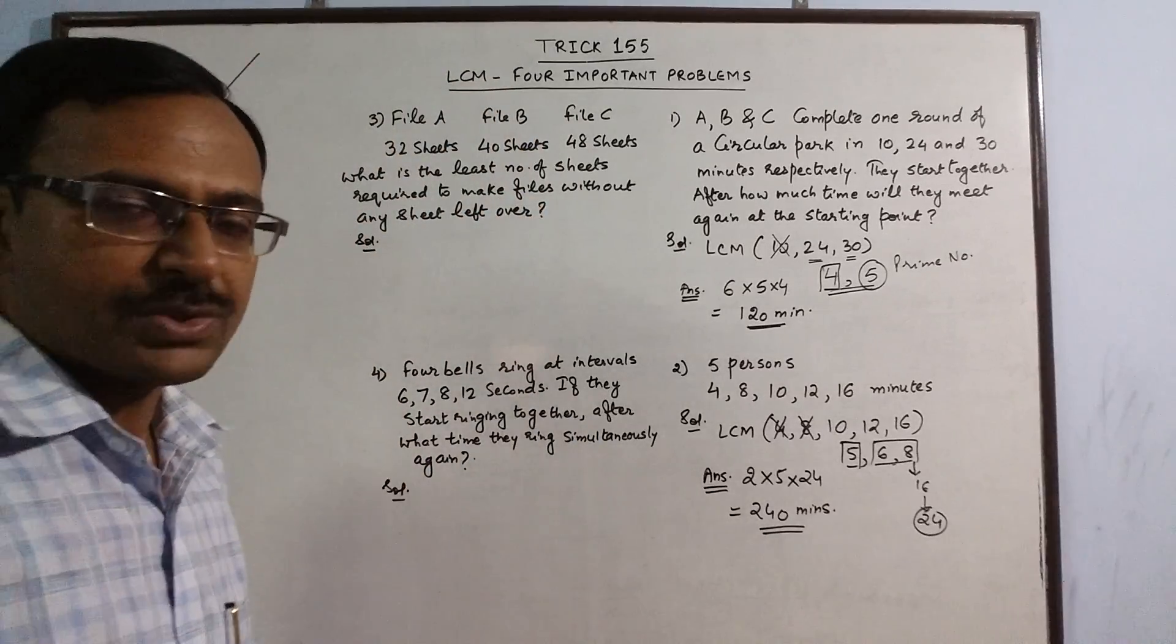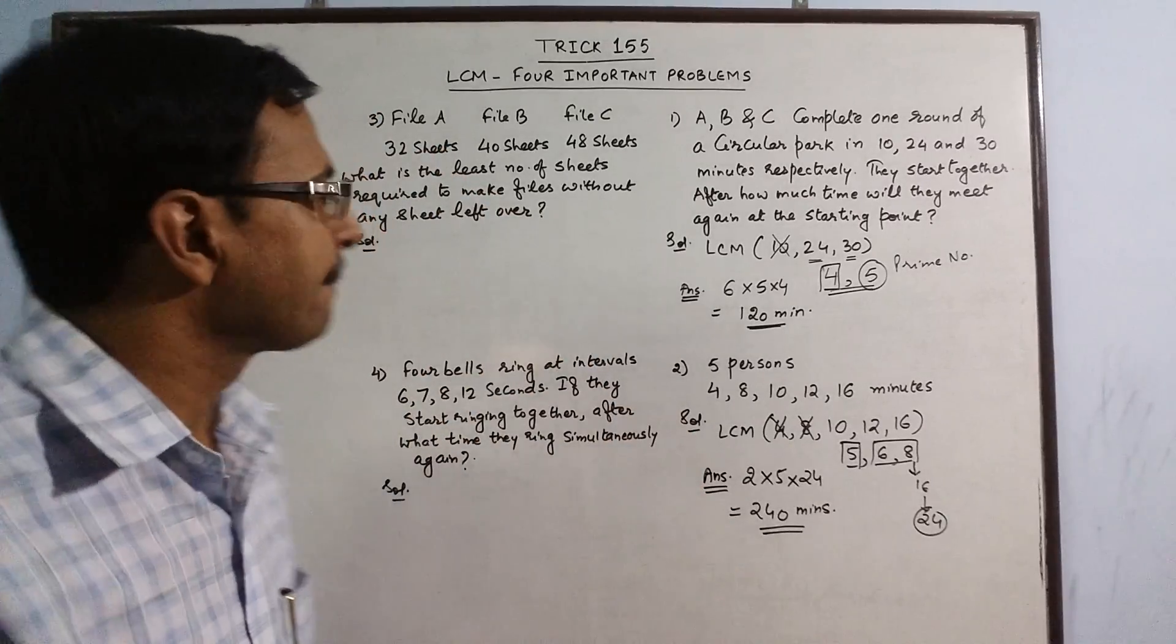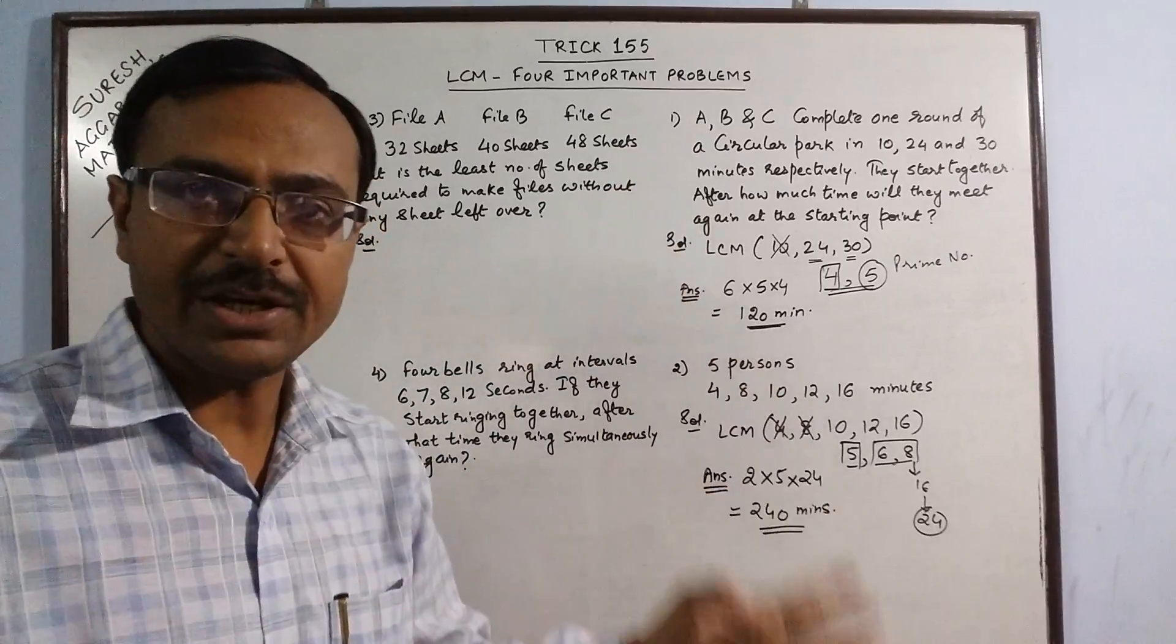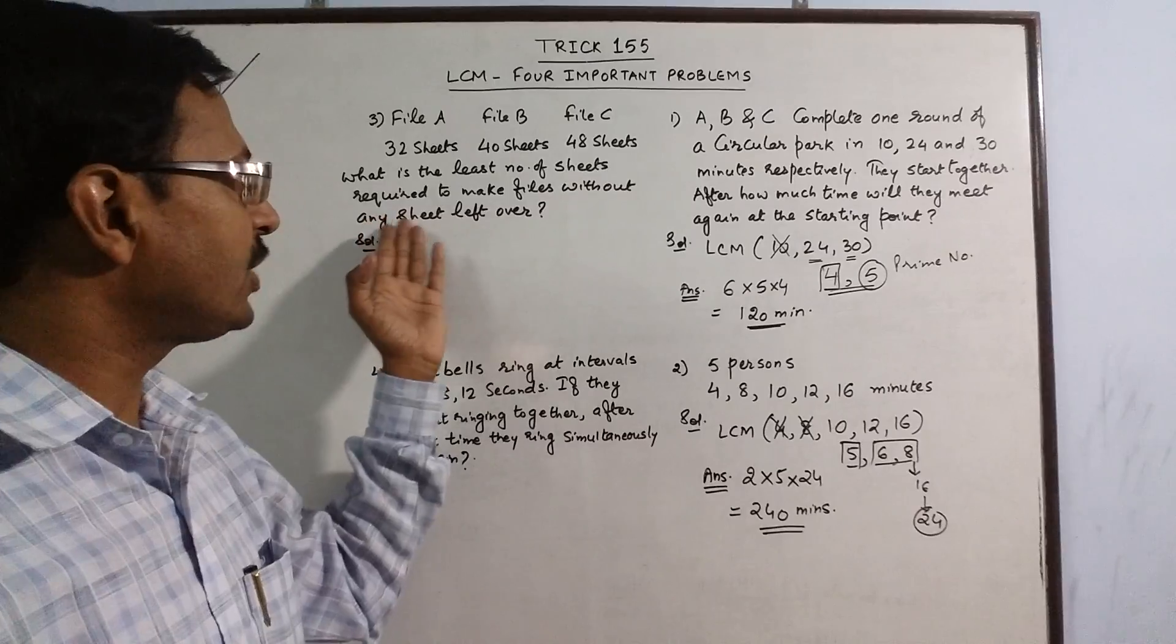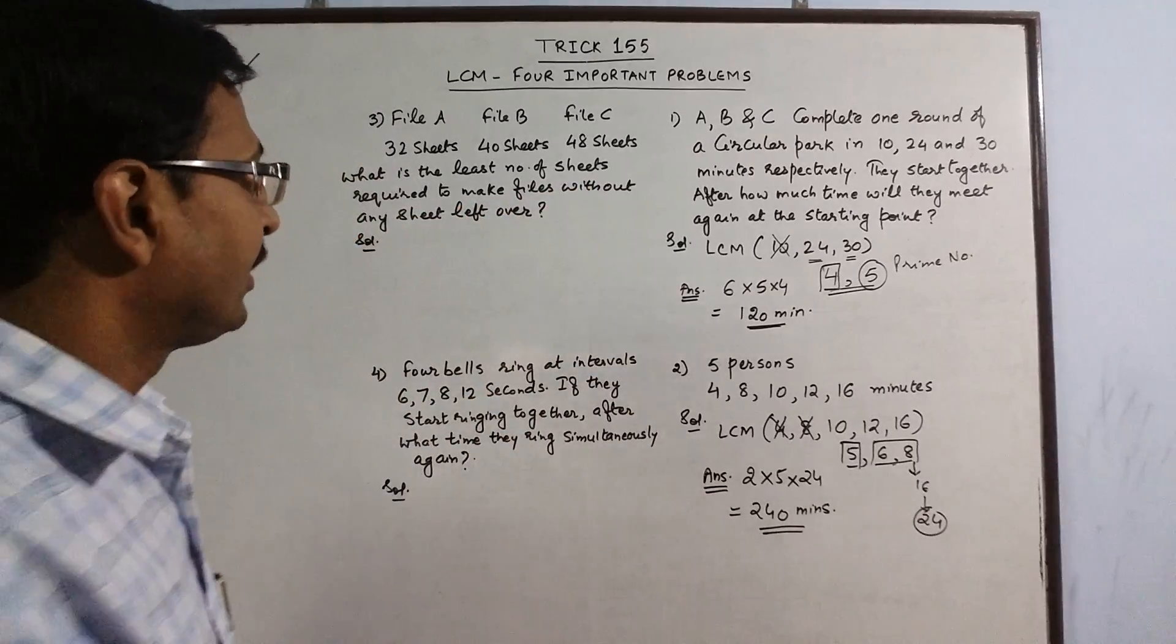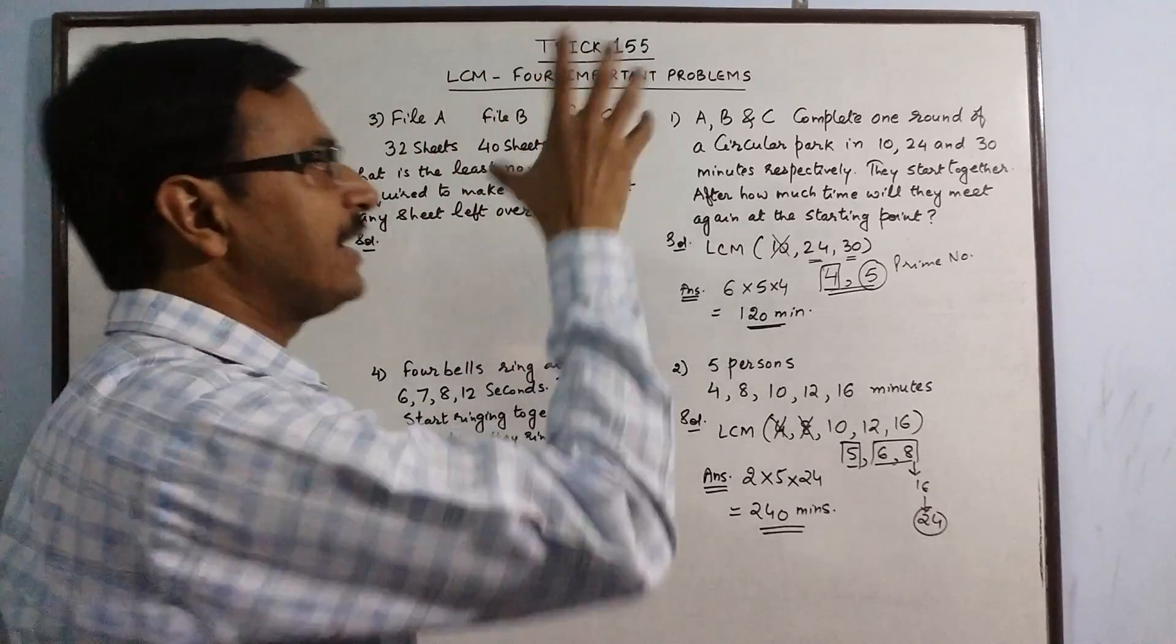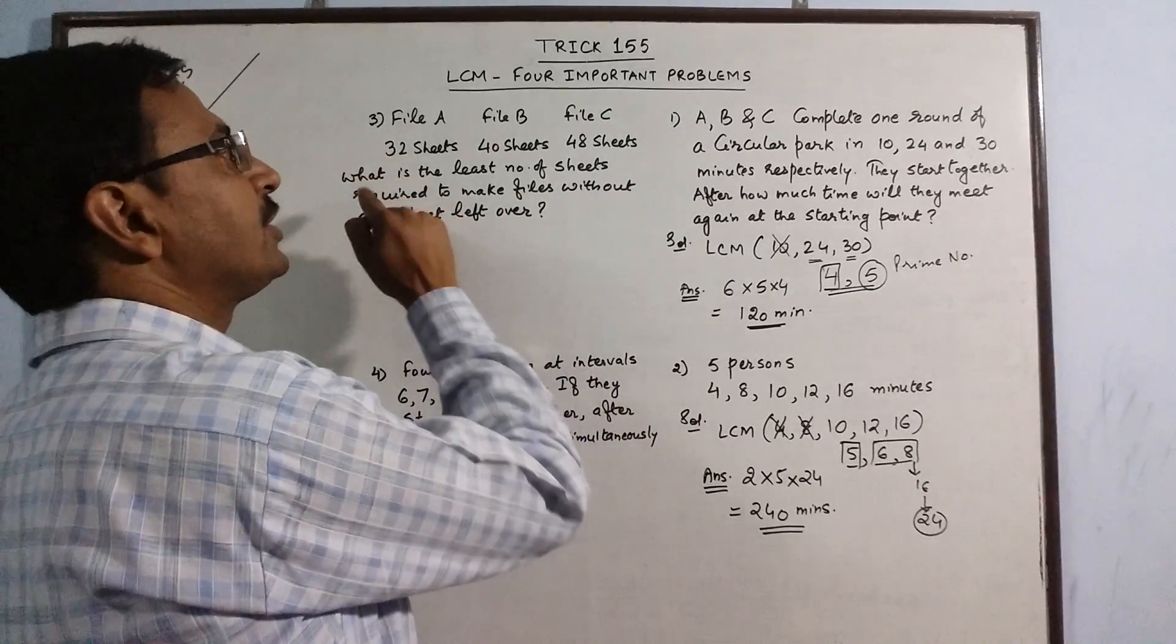Suppose we have another question in which there are files containing sheets of papers. File A contains 32 sheets, file B contains 40 sheets, and file C contains 48 sheets. We need to find the least number of sheets required to make files without any sheet left over. The least number of sheets required to make files - we have to make a number of files from the given number of sheets. So that given number of sheets has to be larger than 32, 40, and 48. Again we need to find the LCM of these 3 numbers.